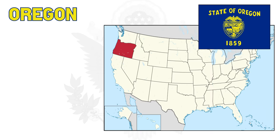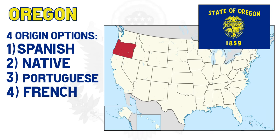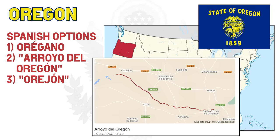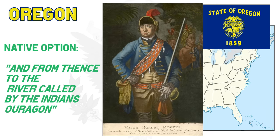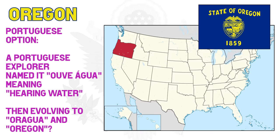Further north is Oregon. The name origin of Oregon is disputed and therefore unknown — there are four options: Spanish, native, Portuguese, or French origin. The Spanish could have named it after the word oregano, a plant which grows in the southern part of the region, after a stream in Spain called the Arroyo del Oregón, or after the term Orejon meaning 'big ear.' The native origin possibility is evident in a 1765 petition to the British king, where Robert Rogers, an American colonial frontiersman, referred to the 'river called by the Indians, Oregón.' In 1904, Sunset magazine argued the name came from a Portuguese explorer who named it Ove Agua, meaning 'hearing water,' after the sound of waterfalls — though this one seems like a stretch. Or the French possibility, where the name came from the spelling of a local river as Wadikon.